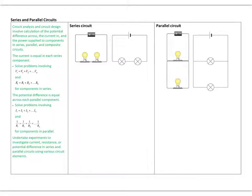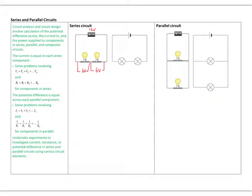If we had a 12-volt battery and two identical light bulbs in series, the 12 volts of energy would have to be split across both light bulbs. An electron comes out the negative and is attracted toward the positive; the light bulbs act as resistors opposing that flow. If they're identical, we lose six volts across each, so V1 plus V2 equals 12 volts.